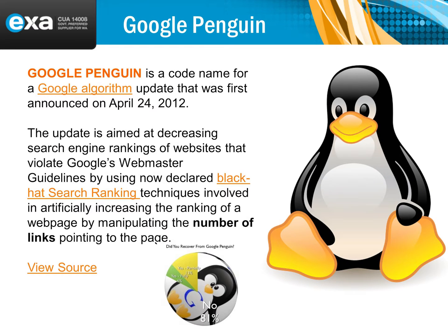Penguin was about links — whether you have good links coming into your website and out of your website. As a government entity, you already have an advantage, because having a .gov domain name really helps with your website ranking. But you don't want spammy websites linking to you; you want to have good quality links in and out of your website.